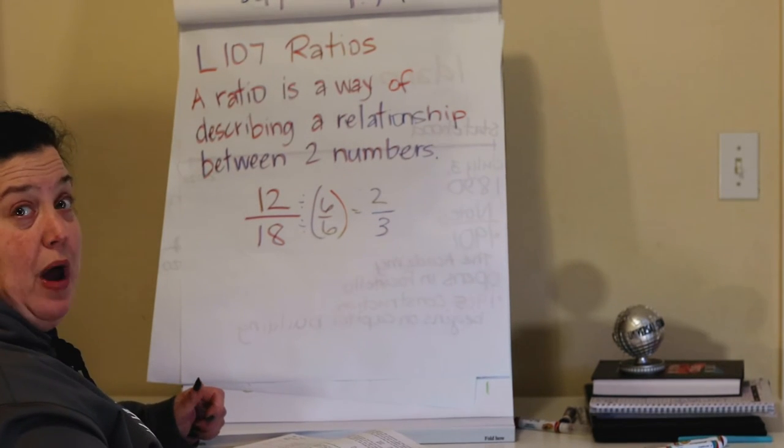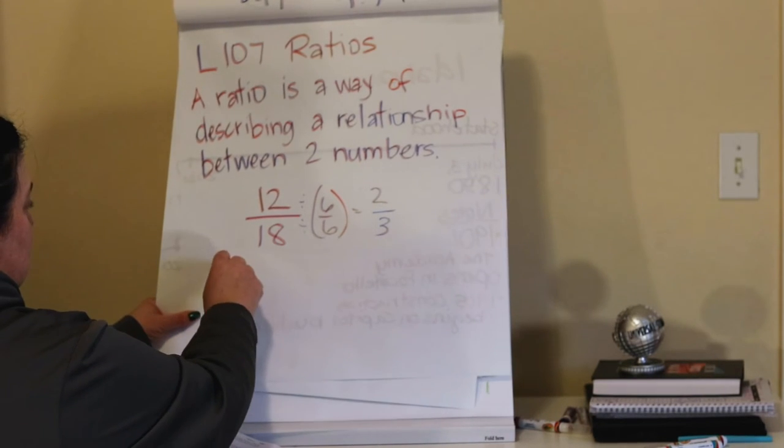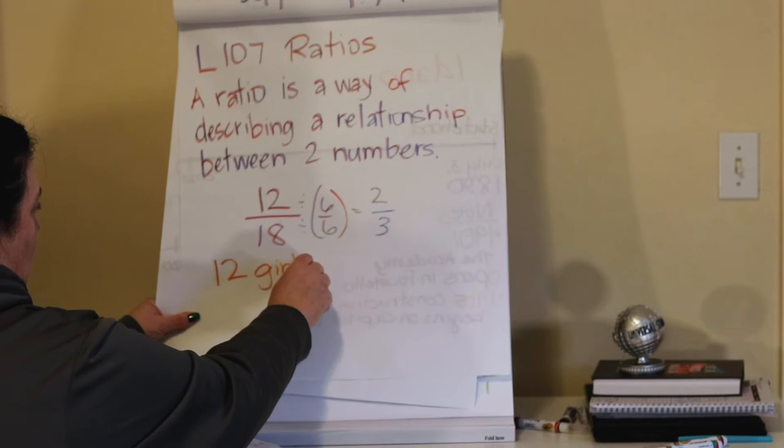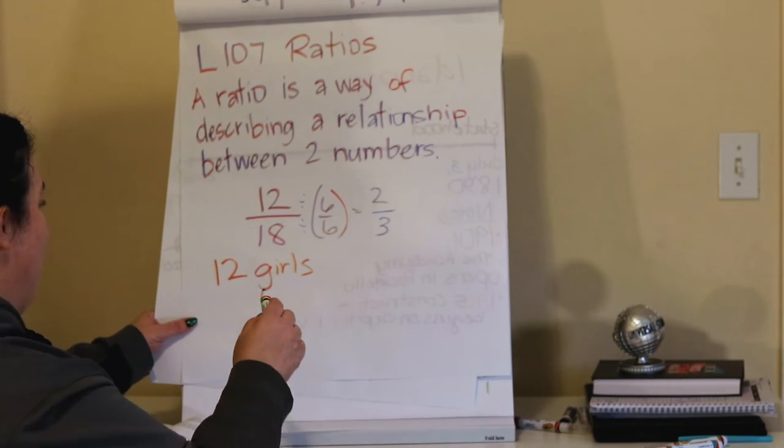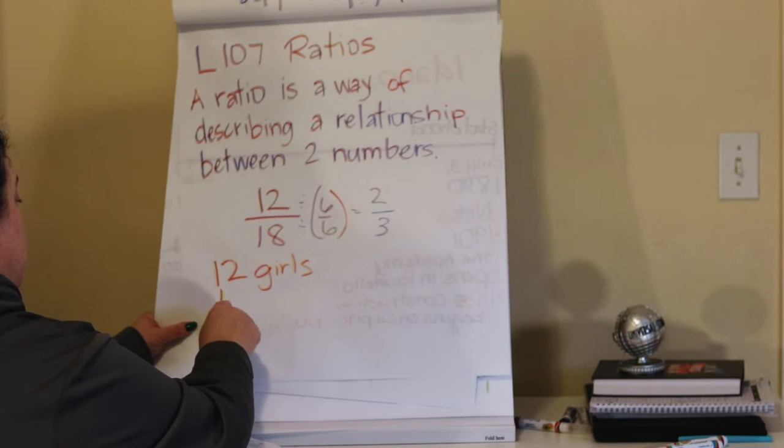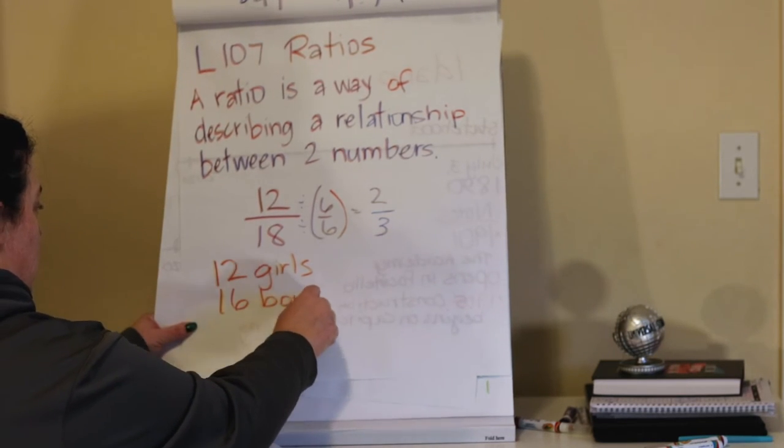It says there were 12 girls. So our first fact we're given is 12 girls. And then it says, and 16 boys in class. So the second figure we're given, 16 boys.